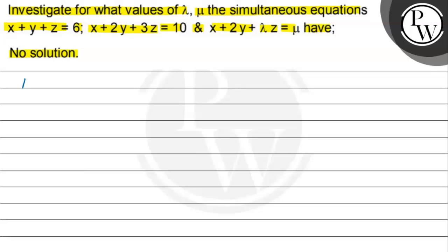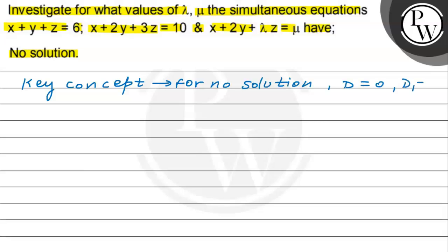For no solution, the condition is: D is equal to 0, D1 is not equal to 0, D2 is not equal to 0, and D3 is not equal to 0.